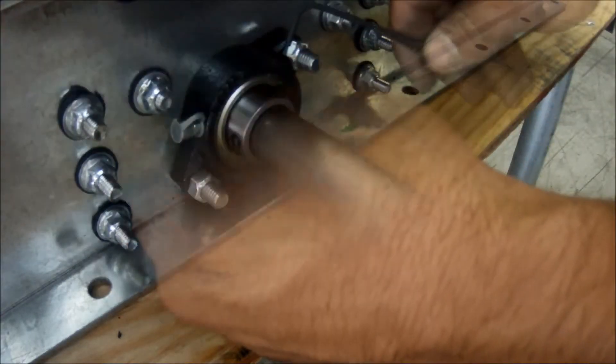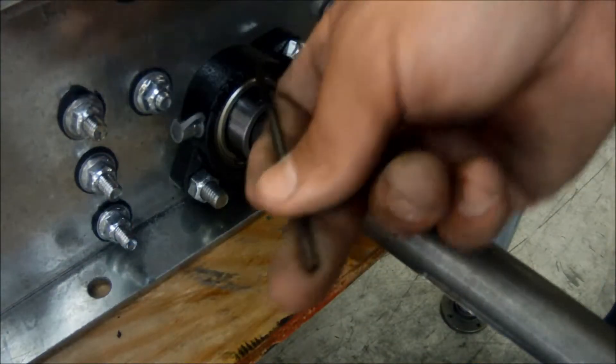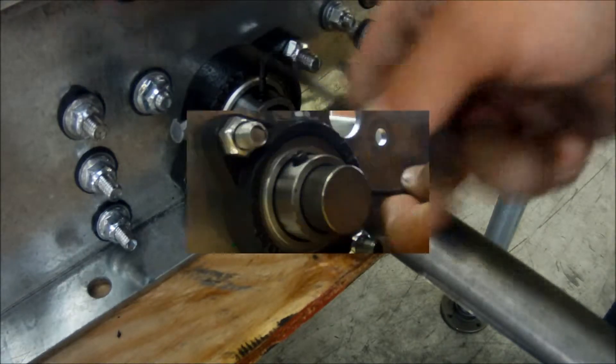Once the gear and the rack are aligned, you can then retighten the Allen bolts. Be sure to snug them and not over tighten them.